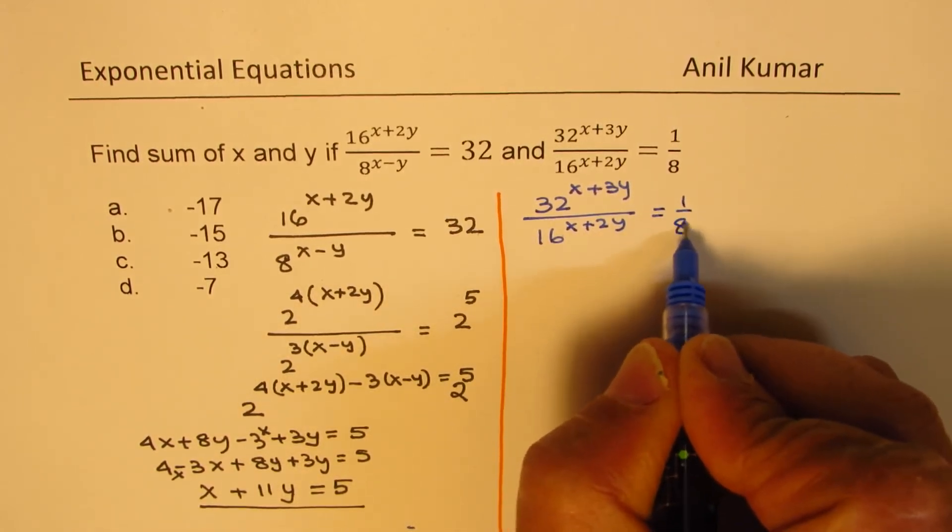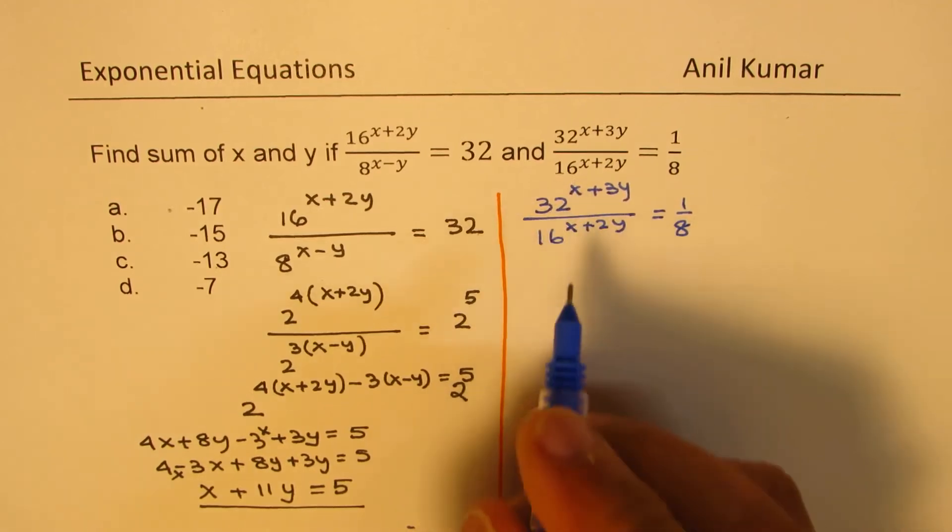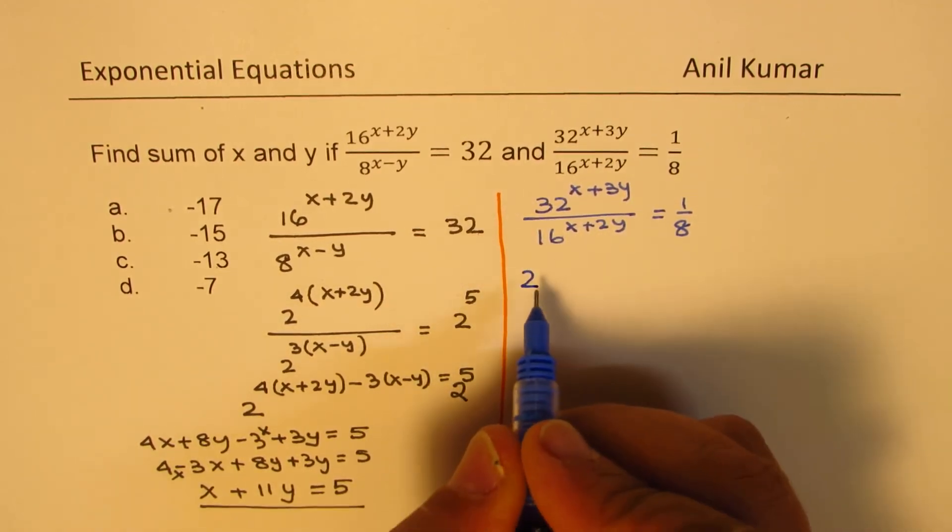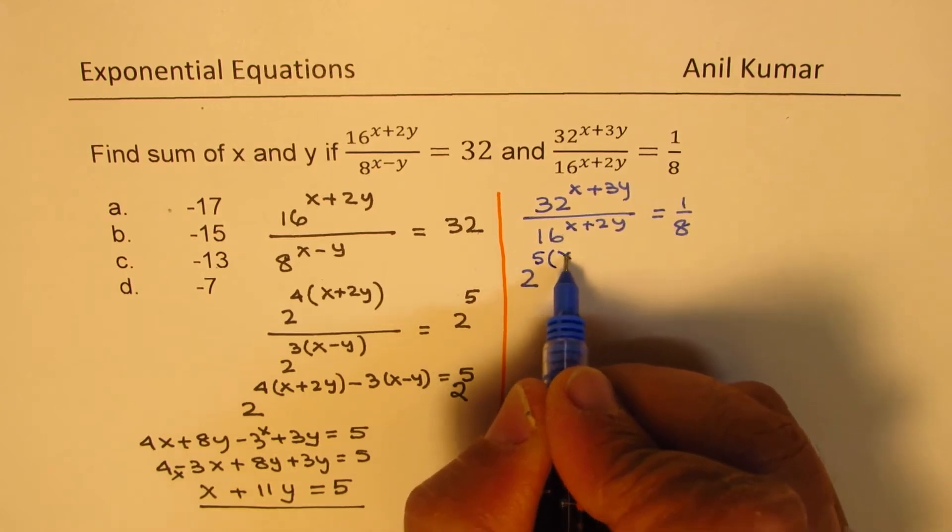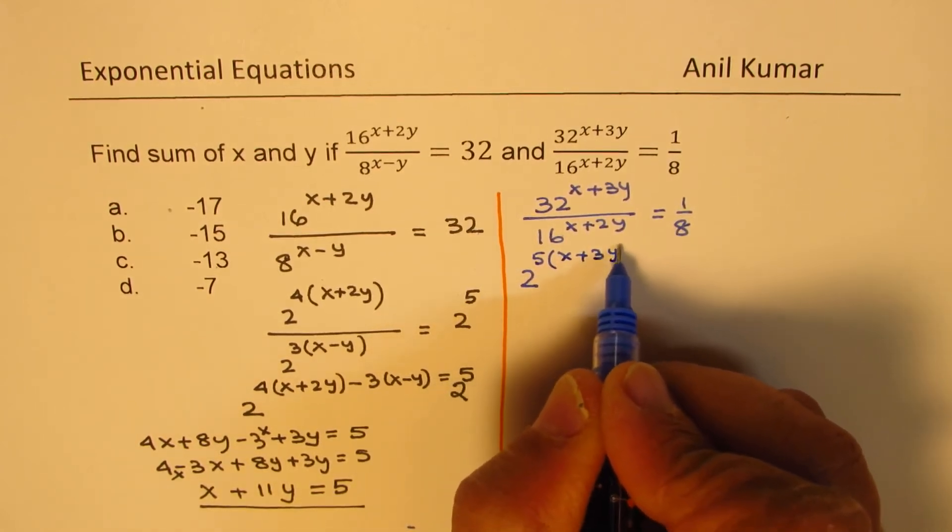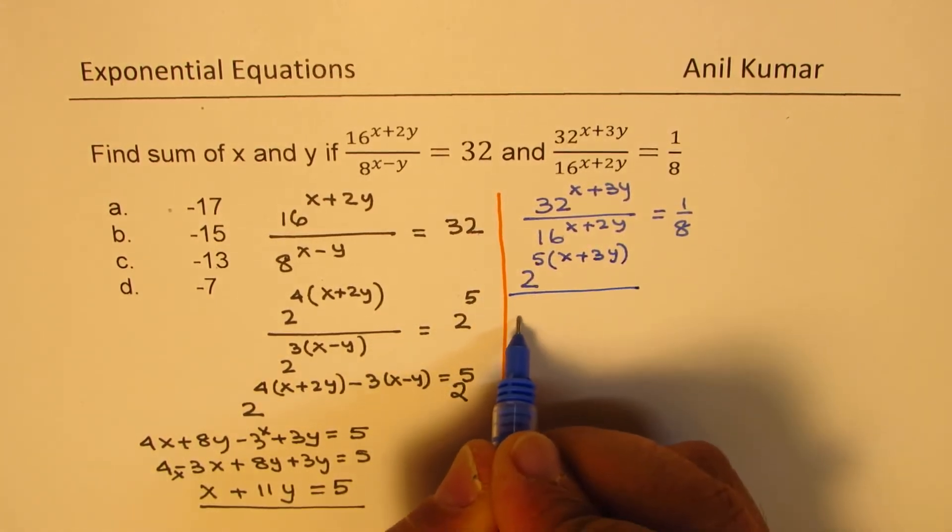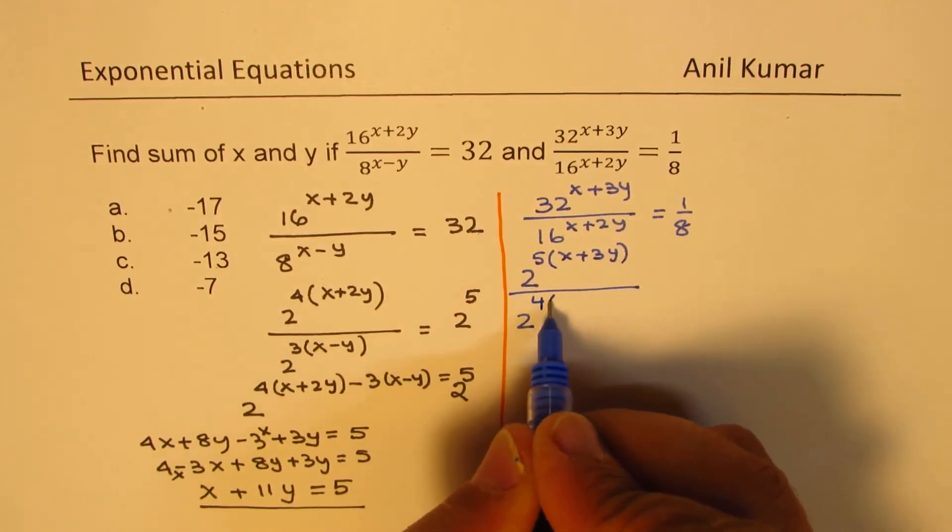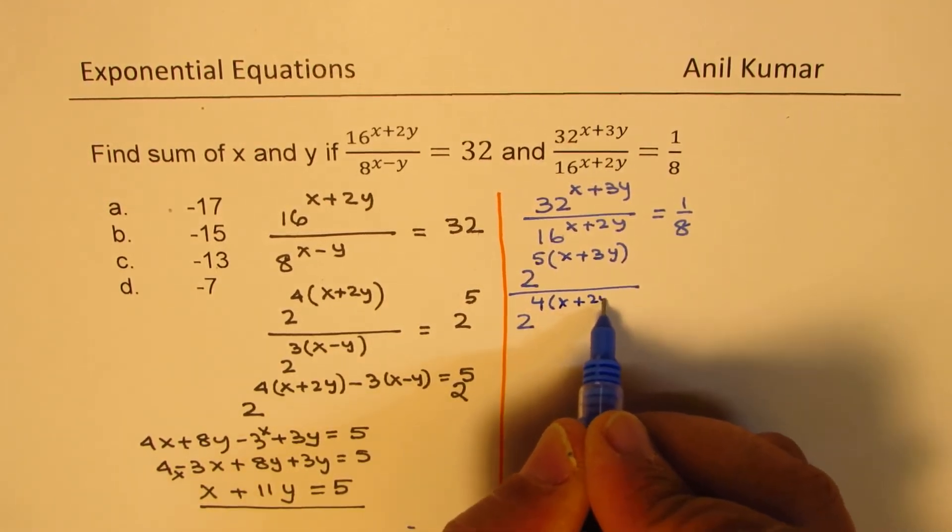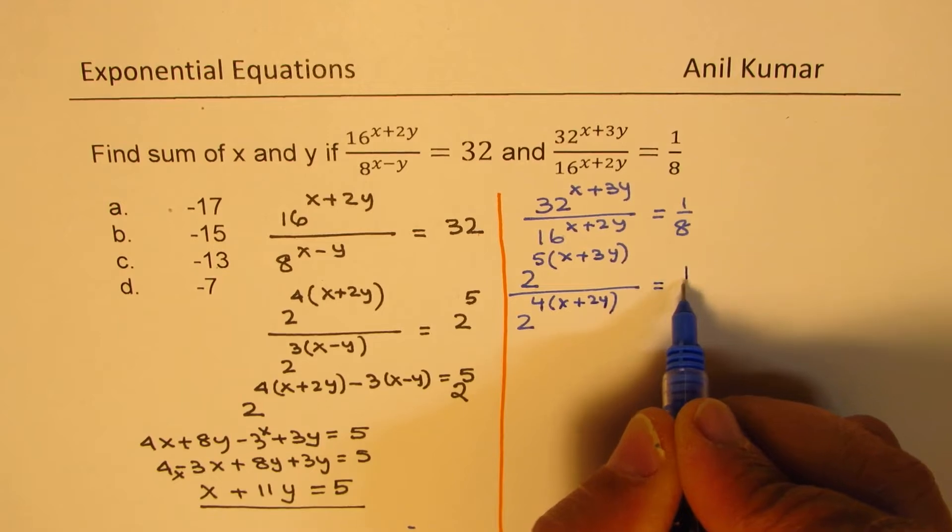32 is 2 to the power of 5 times x plus 3y, 16 is 2 to the power of 4 times x plus 2y, and 1 over 8 equals 2 to the power of minus 3.